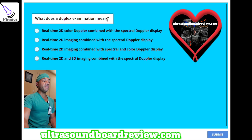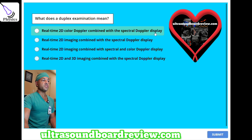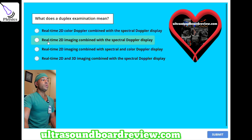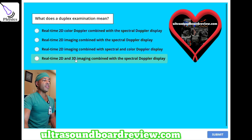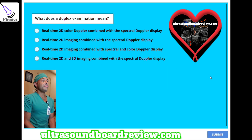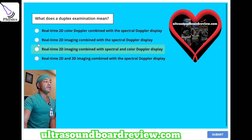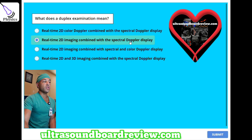What does a duplex examination mean? A, real-time 2D color Doppler combined with spectral Doppler display. B, real-time 2D imaging combined with spectral Doppler display. C, real-time 2D imaging combined with spectral and color Doppler display. Or D, real-time 2D imaging combined with spectral Doppler display. The answer is B — real-time 2D imaging combined with spectral Doppler display.